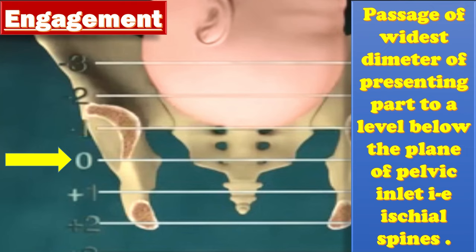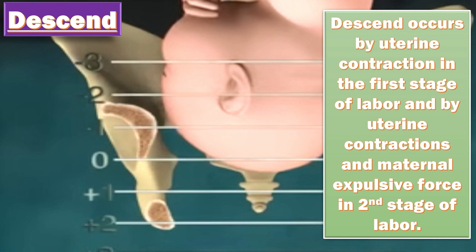Next comes Descent. After Engagement, the head descends. It occurs by uterine contraction in the first stage of labour and by uterine contractions and maternal expulsive forces in the second stage of labour.